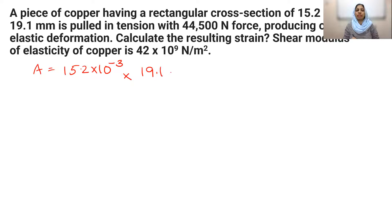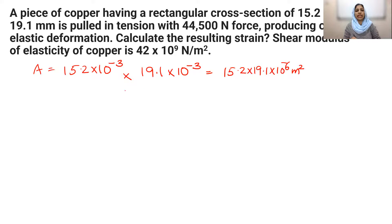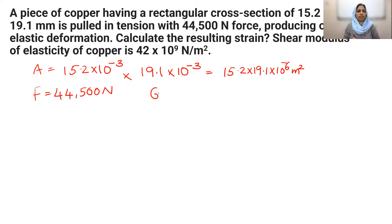The cross-sectional area is 15.2 × 19.1 × 10⁻⁶ m². As an elastic deformation producer, shear modulus G, which is eta, is given as 42 × 10⁹ Newton per meter square.